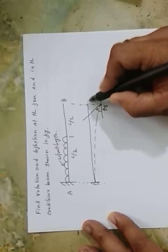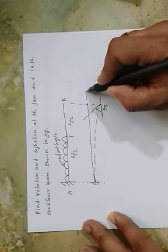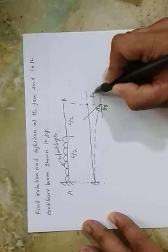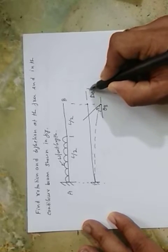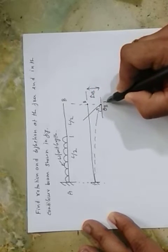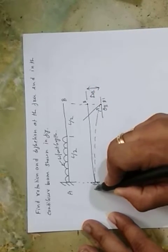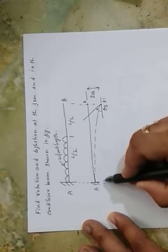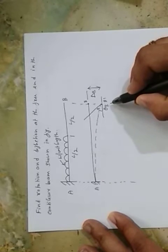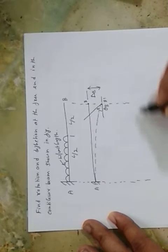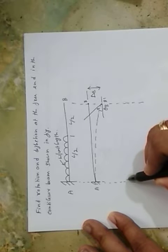And as I explained in the previous session, this is what is the deflection delta B, so B to B dash. Now, the second thing is we need to get the bending moment diagram.